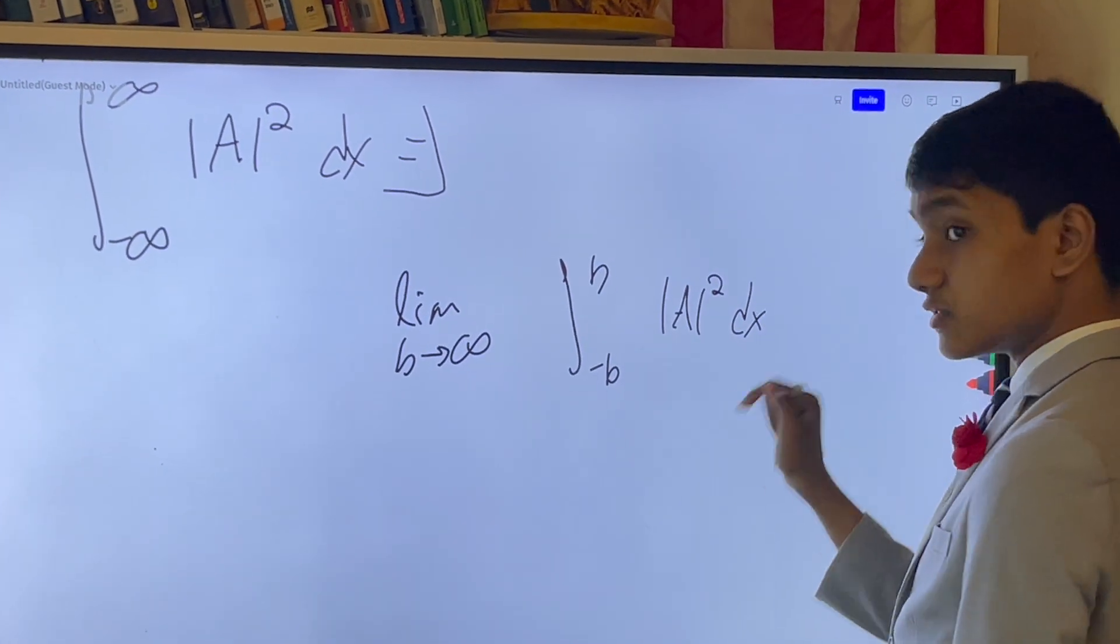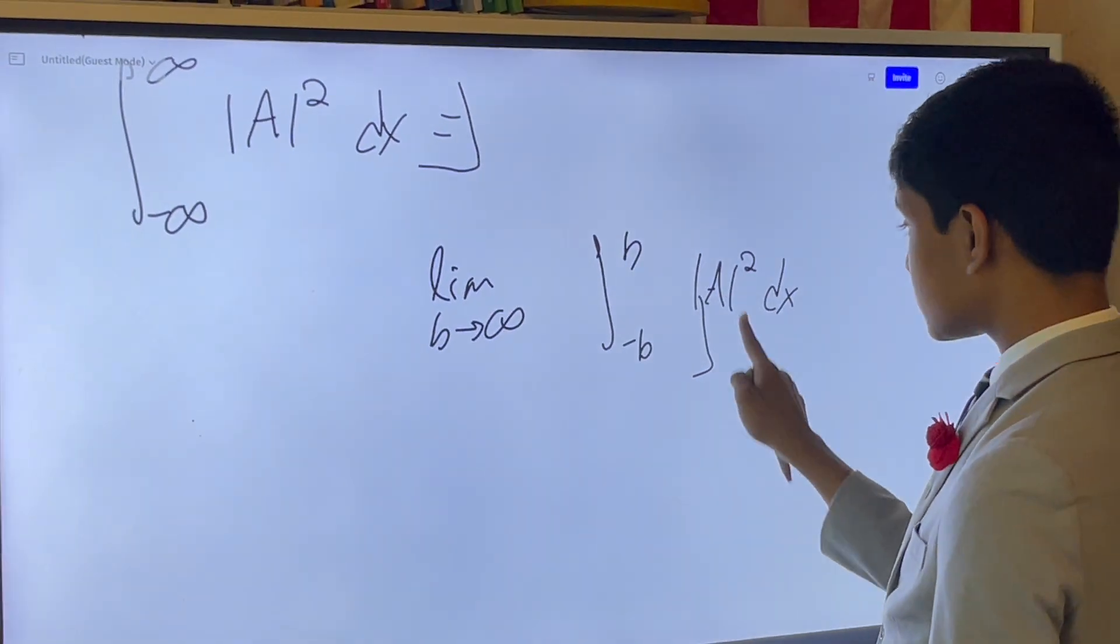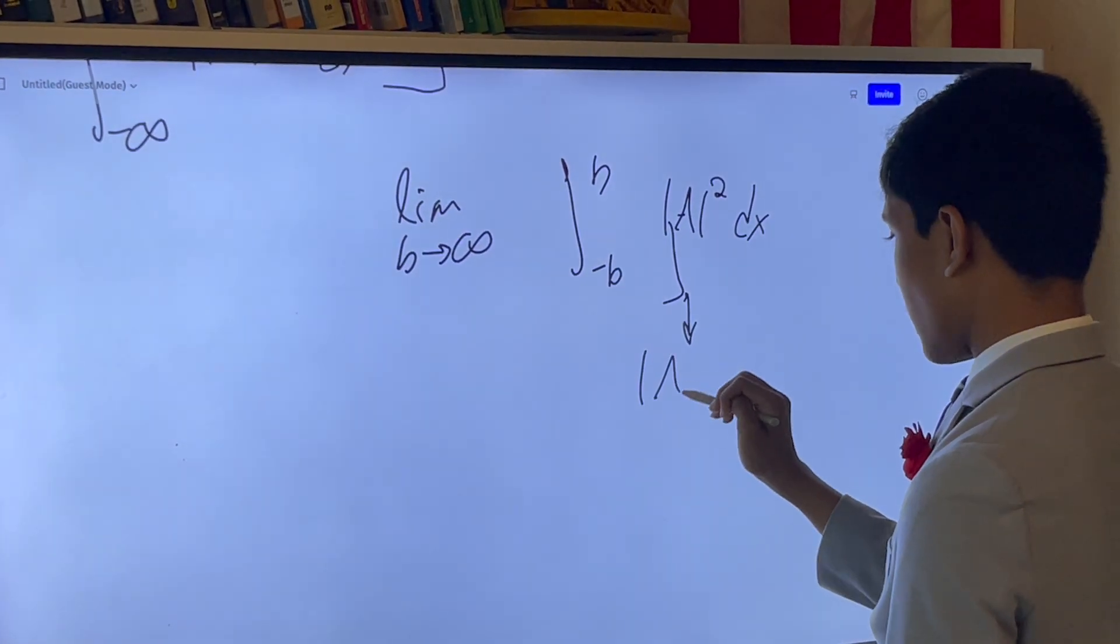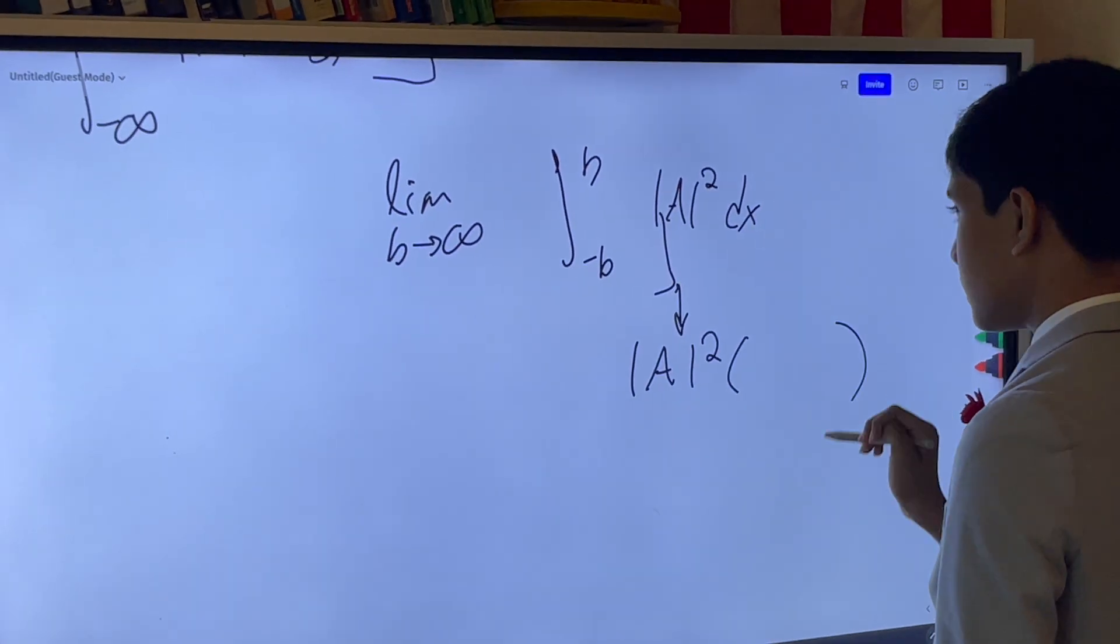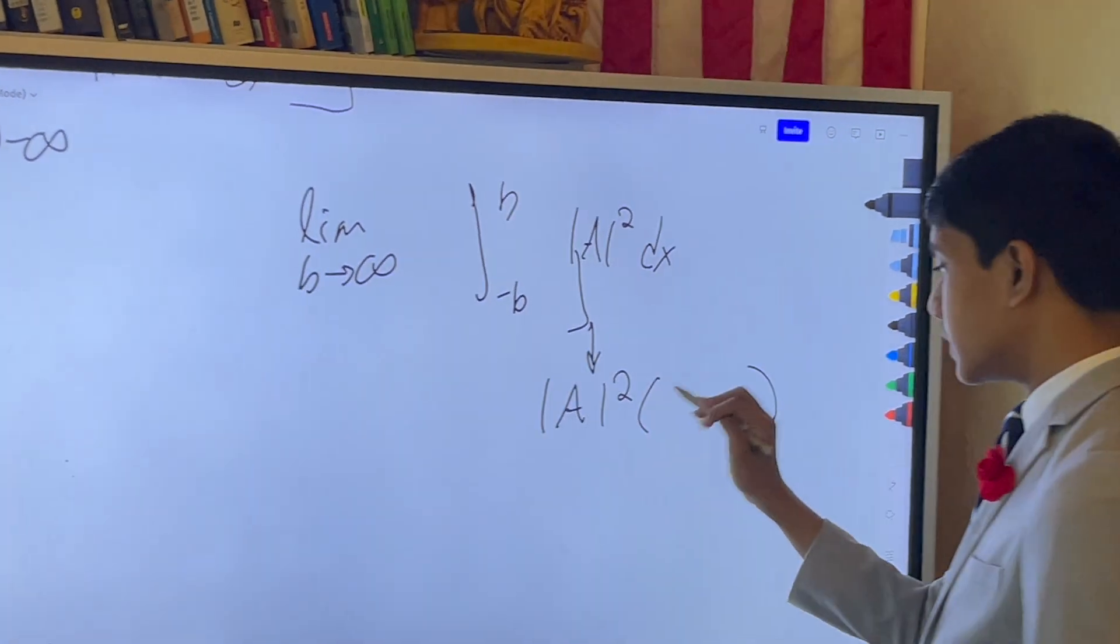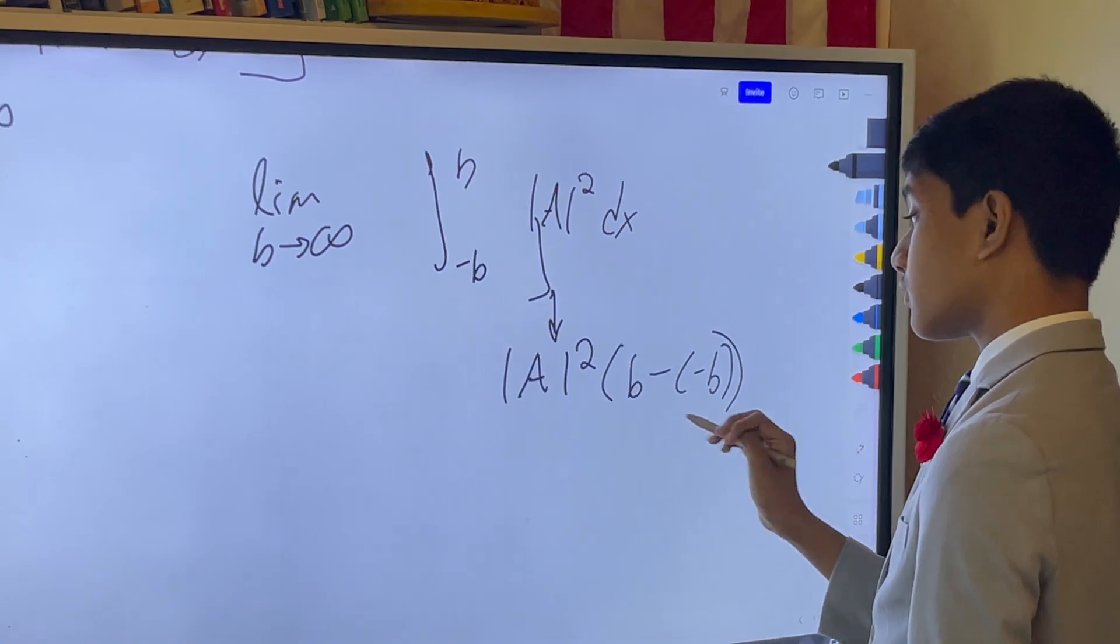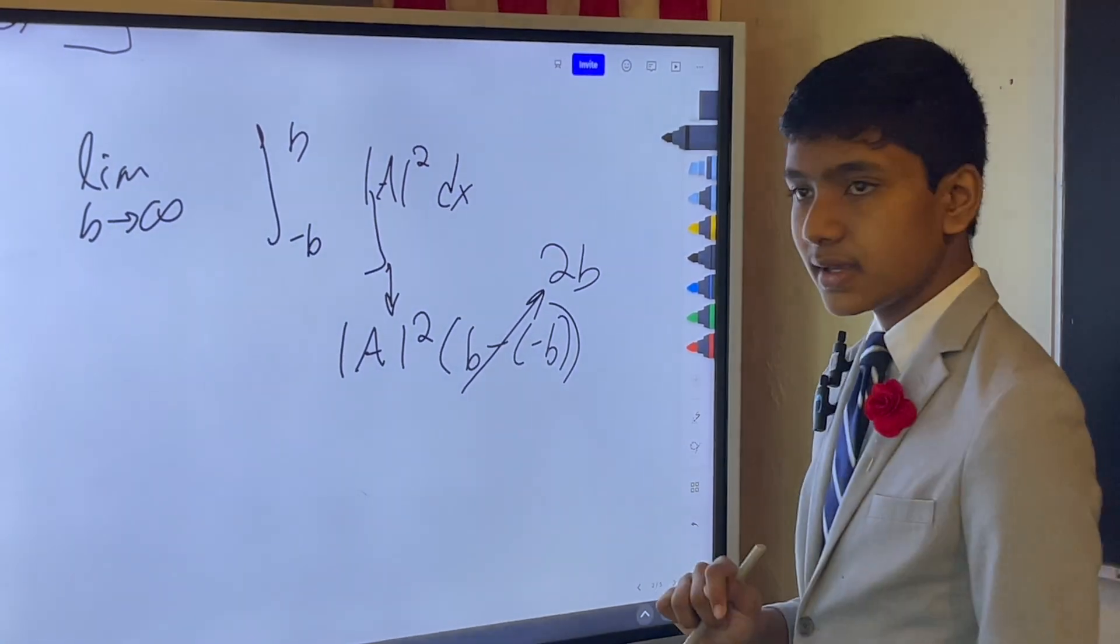And, of course, if we do that, this gives us, since we're not integrating over a or anything, this part is just going to be b minus minus b, which unfortunately doesn't cancel out, but makes 2b.